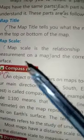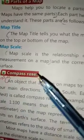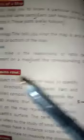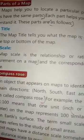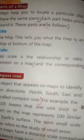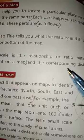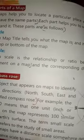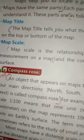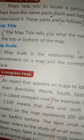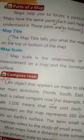Map Scale: Map scale is the relationship or a show between a linear measurement on a map and the corresponding distance on the surface. Linear yani lakiri — lakiri ke mutaliq. Corresponding — is ke mutaliq ya is ke mutaliq.